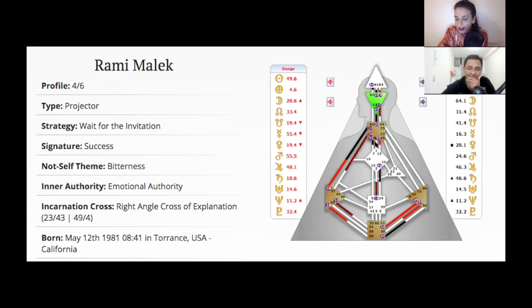Gate 31, yes, we also have gate 31 here in the throat. This is the gate of the natural leader. This is the leadership, the person that's like a leader because it's elected by other people. It's not a leadership through force, it's called like the democratic leader.